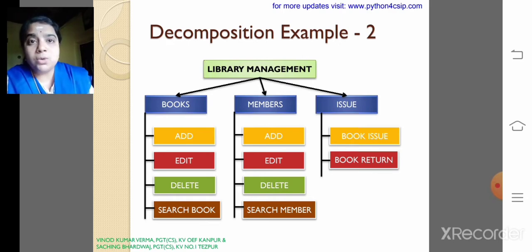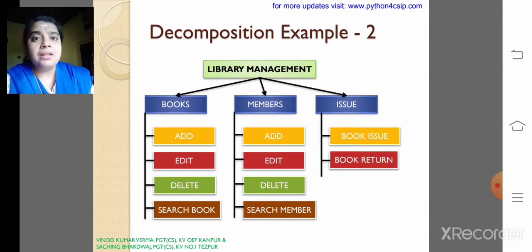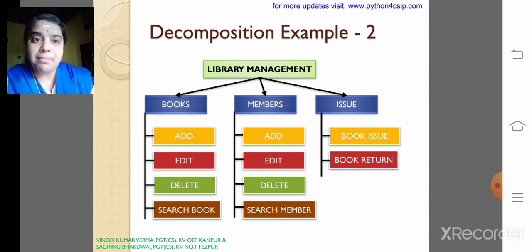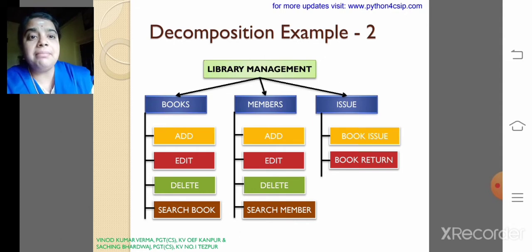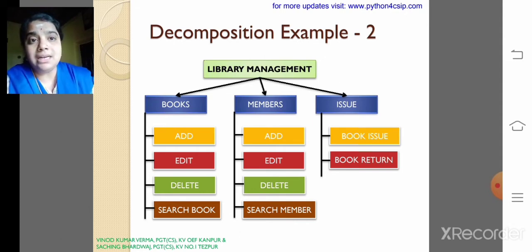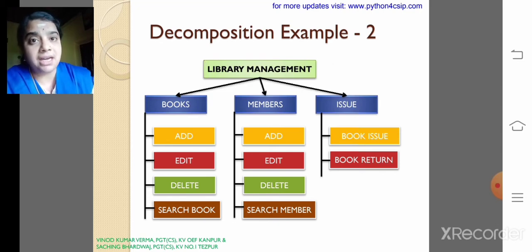Within the books module, what tasks do we need? We need addition of a book — that is book name, publisher name, and so on. It can be add, edit, delete, and we can also search a book. That is a complete set of subtasks for books.